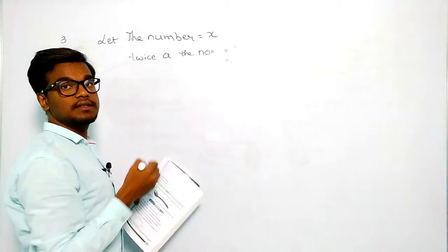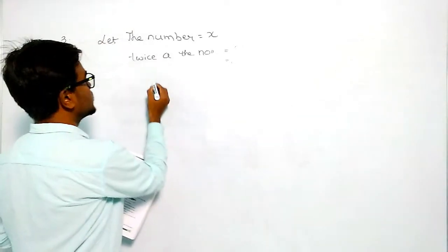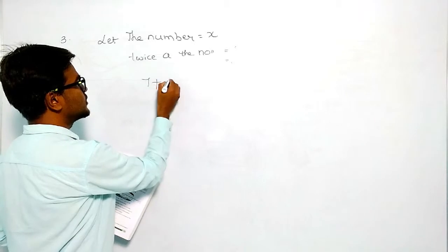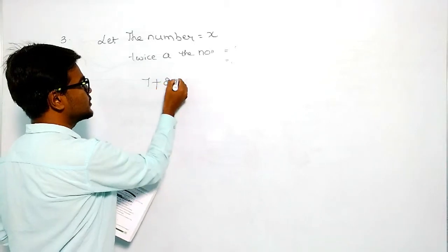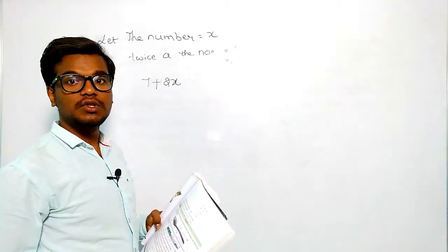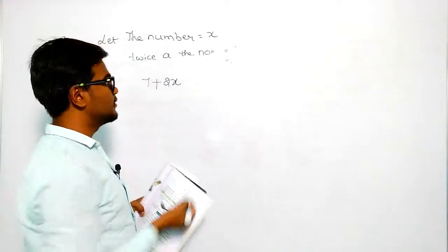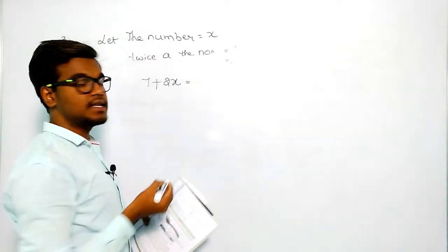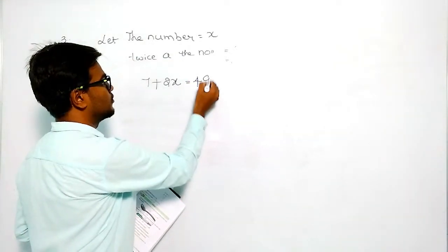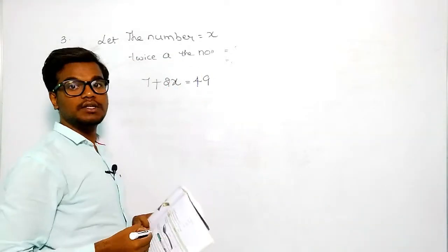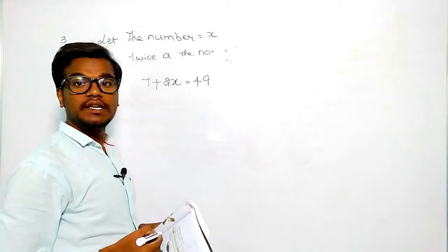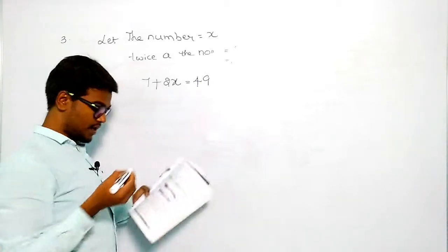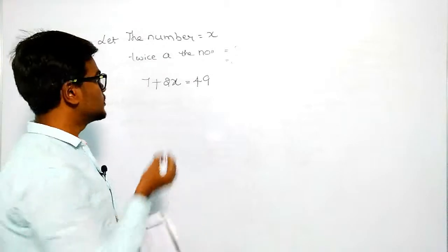So we add seven: 7 plus 2x. Then we get 49. So we need to find what that number is by solving this equation.